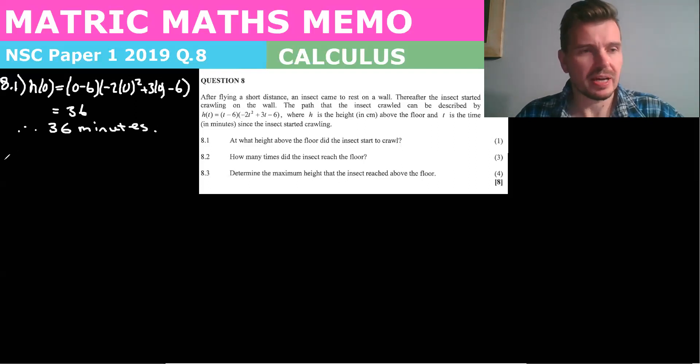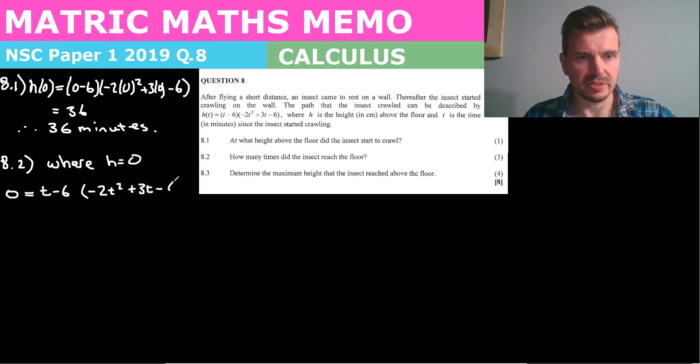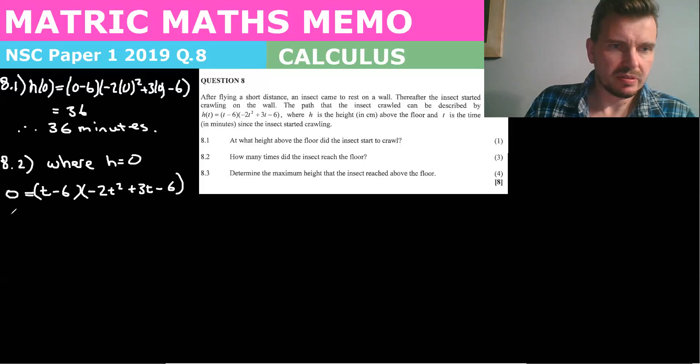8.2. How many times did the insect reach the floor? Okay. So that means where h is zero, because that's when it touched the floor. So what we can do is we can say zero equals t minus six and then negative two t squared plus three t minus six. We know the first time it touched the floor will be at six minutes because t minus six equals zero. So then it would be t equals six.